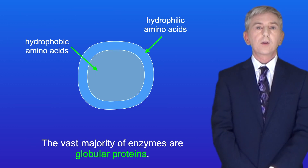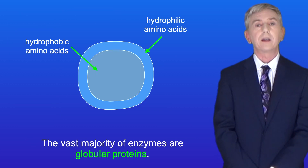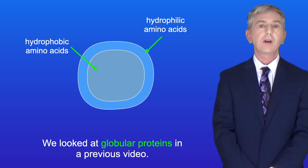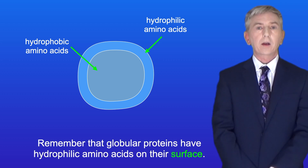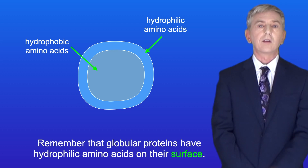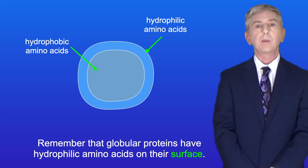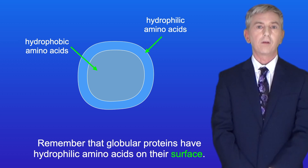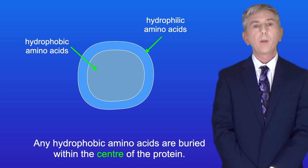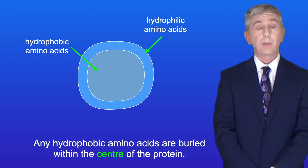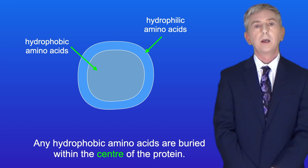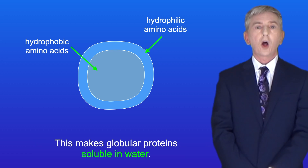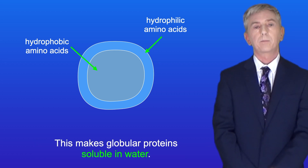The vast majority of enzymes are globular proteins, and we looked at globular proteins in a previous video. Globular proteins have hydrophilic amino acids on their surface, and any hydrophobic amino acids are buried within the centre of the protein. This makes globular proteins soluble in water.